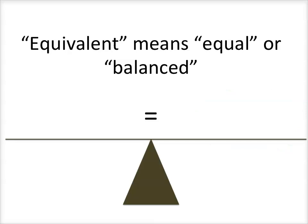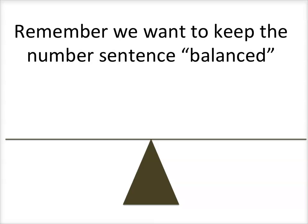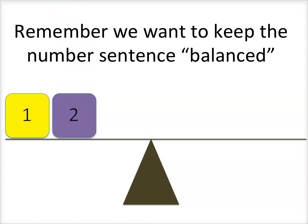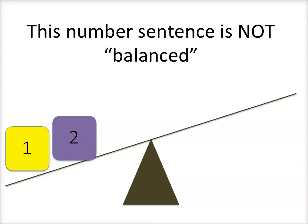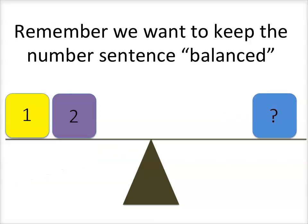We can think of it like a set of scales where they're balanced because they're both equal. If we want to keep a number sentence balanced, let's look at what happens when we start adding in numbers. If I put a one and a two on this side, what happens? Well, our number sentence is no longer balanced. So what would we have to do to make our number sentence balanced again?